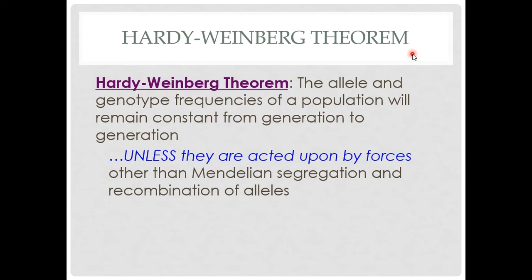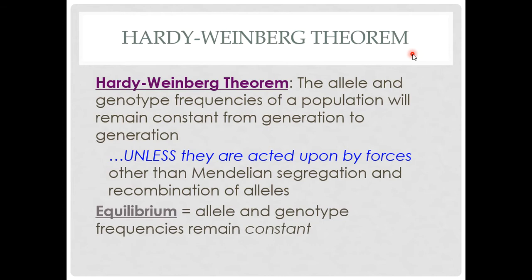If we get data that allows us to reject the null hypothesis, that tells us Hardy-Weinberg is wrong — something interesting is happening and evolution is occurring. Hardy-Weinberg equilibrium is when allele and genotype frequencies remain the same across generations. If we are not at equilibrium, that means there is some outside force — which is going to be evolution.